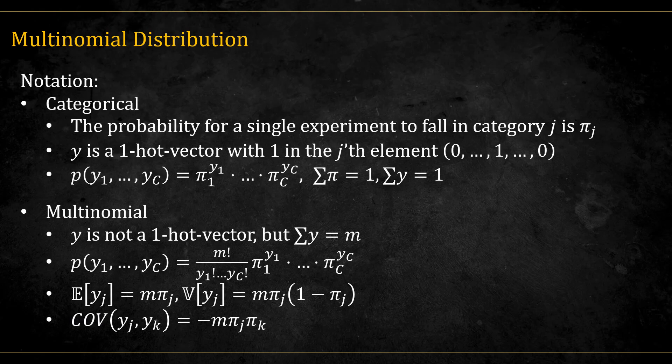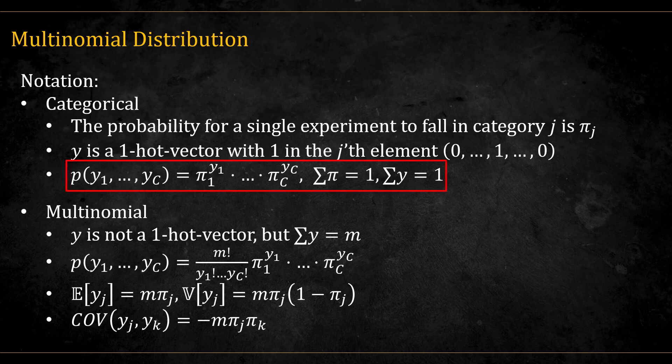Let's establish some notation. For categorical distribution, the probability that a single experiment falls in category j is pi j. Y is a one-hot vector with one in the j-th element. And the probability is defined by this formula over here, where both the sum of pi's and the sum of y's are equal to 1.